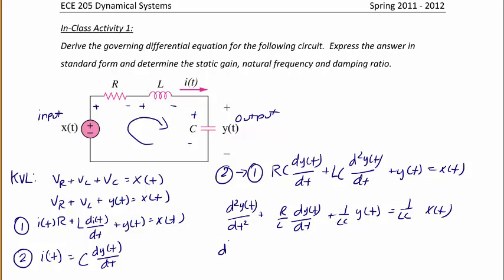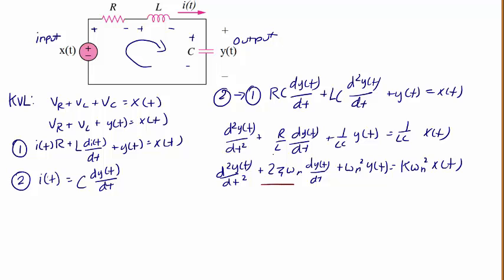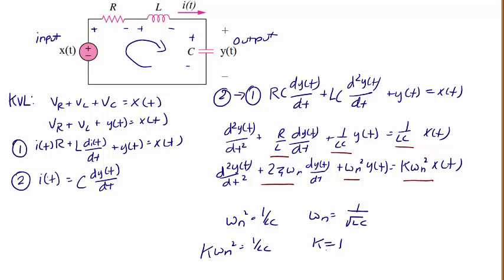Comparing this to our standard governing differential equation — the second derivative of y plus 2 zeta omega sub n times the first derivative of y plus omega n squared y of t equals K omega n squared x of t — we see that 2 zeta omega sub n equals R over L, omega n squared equals 1 over LC, and K omega n squared equals 1 over LC. Therefore, omega n equals 1 over the square root of LC, and since K omega n squared also equals 1 over LC, the static gain K equals 1.